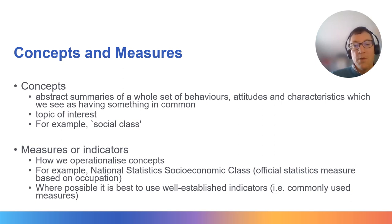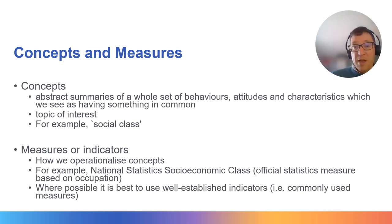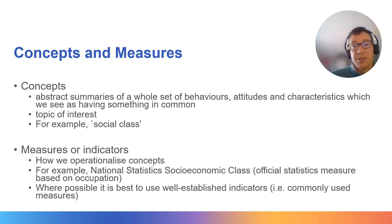What might we do if we have several potential observed variables? Well, we might choose one measure or choose another measure, or we might explore how these measures are associated.